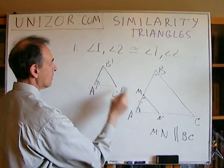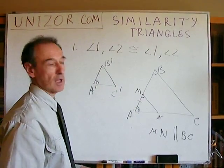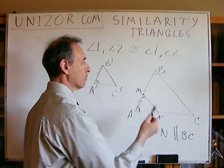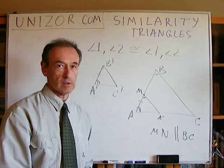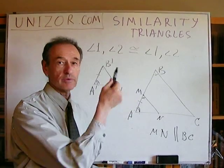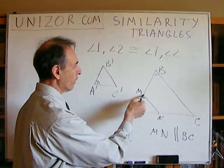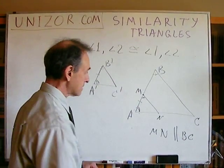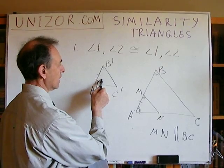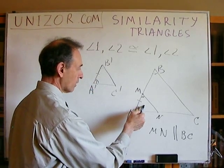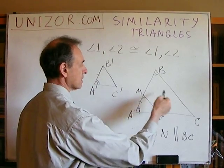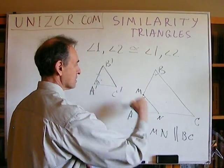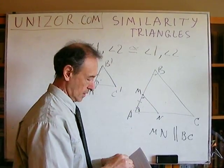So triangles A'B'C' and AMN are congruent. But by the lemma, AMN is similar to the big triangle ABC, since MN was drawn parallel to BC. Therefore A'B'C' is also similar to ABC. That completes the proof of theorem one — two equal angles are sufficient for similarity.